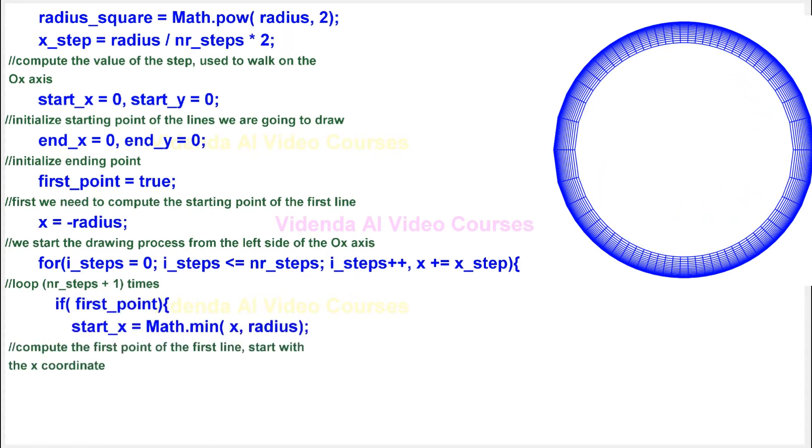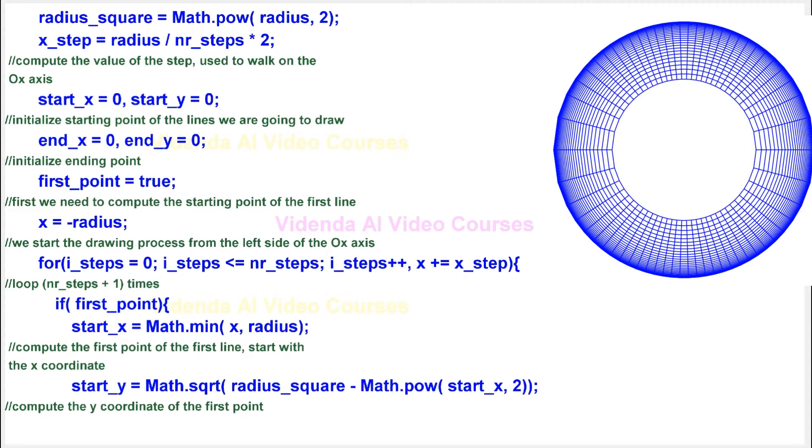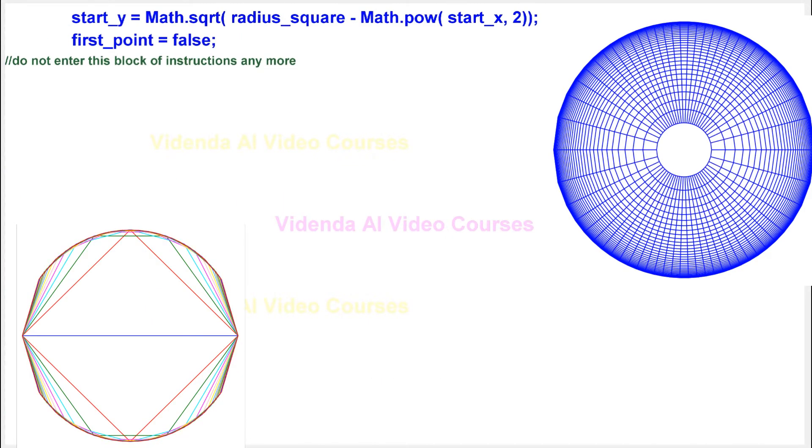Compute the first point of the first line. Start with the x-coordinate. Compute the y-coordinate of the first point. Do not enter this block of instructions anymore.